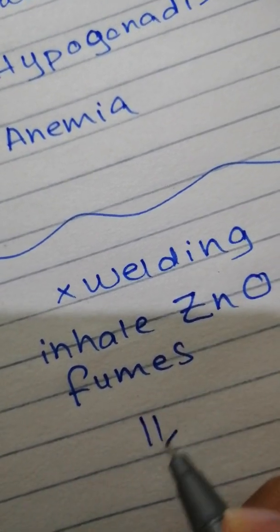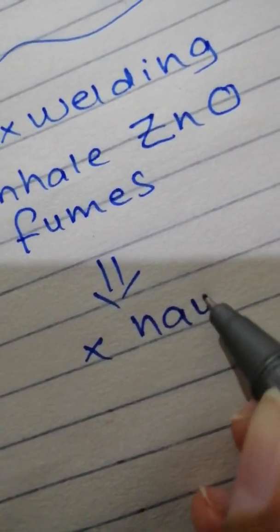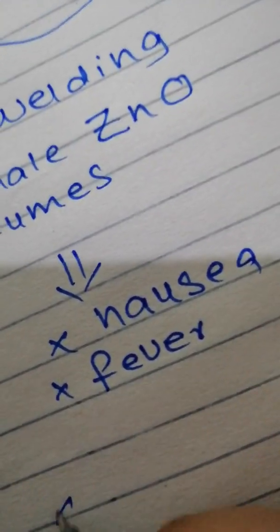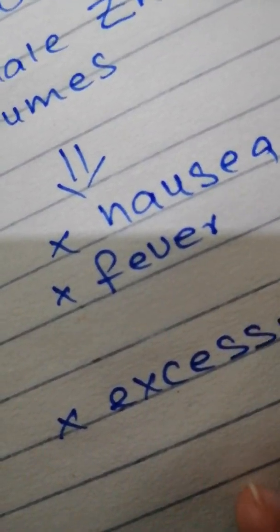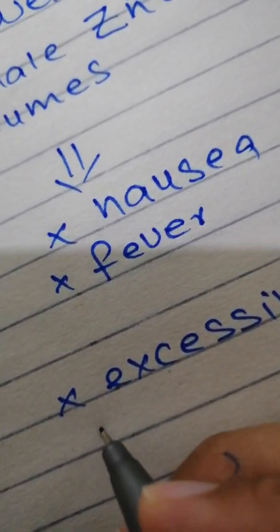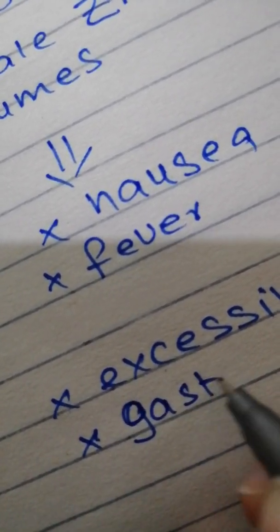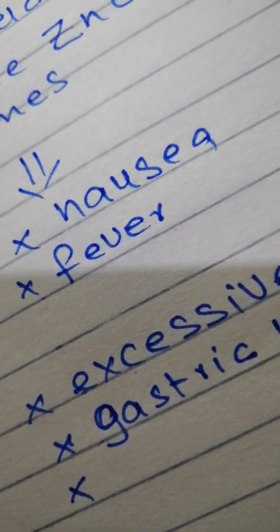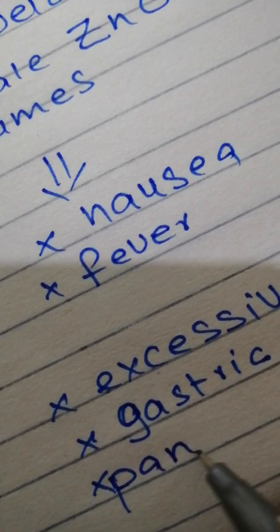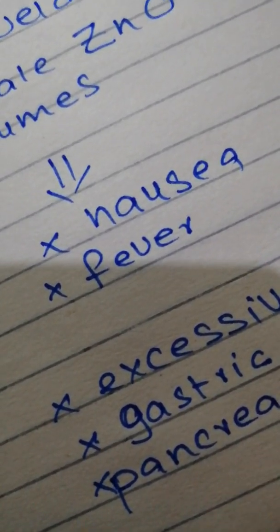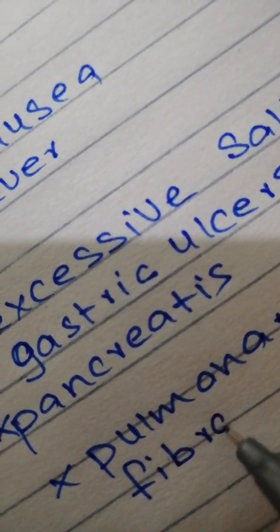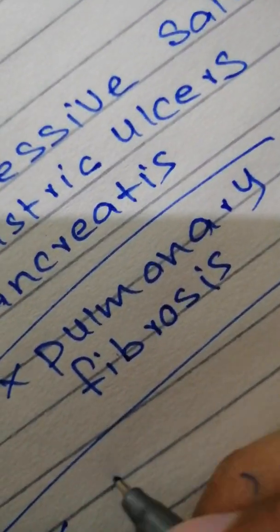What are the salient features of zinc toxicity? Nausea, fever, interestingly excessive salivation, there are GIT related problems mainly gastric ulcers, there is also pancreatitis, and pulmonary fibrosis. There is coughing.